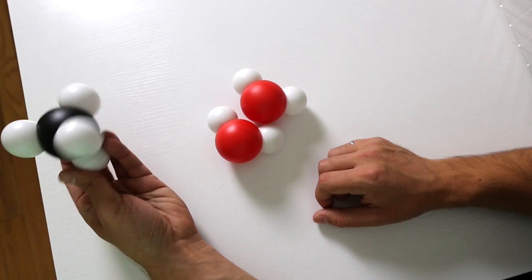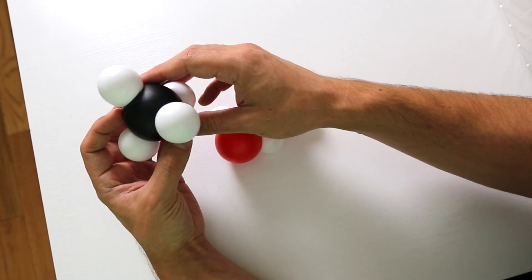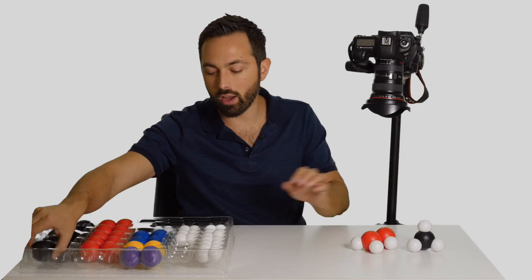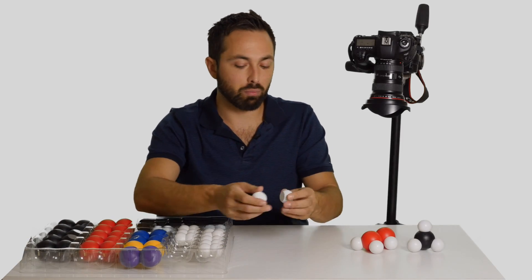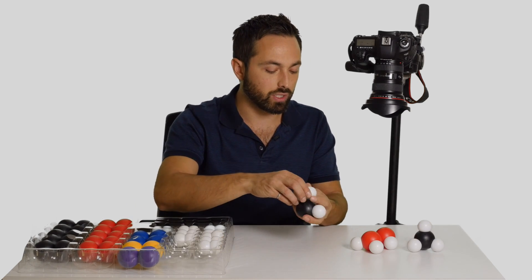In the case of methane, because it's so symmetric, there is no negative side and no positive side. So if you have multiple methane molecules, they don't really feel much attraction towards each other.